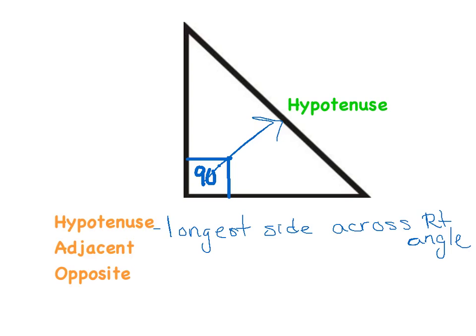Our second word is adjacent. If you're familiar with that, great; if not, you can think of it as meaning 'next to.' All of you sit adjacent to somebody in class — you sit next to somebody in class. It's going to be important that we understand that adjacent means next to, and I'll label that side in a moment. And opposite in this course is going to mean 'across from.'